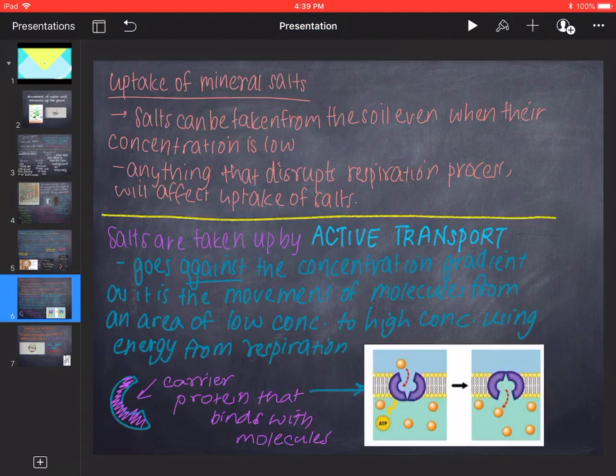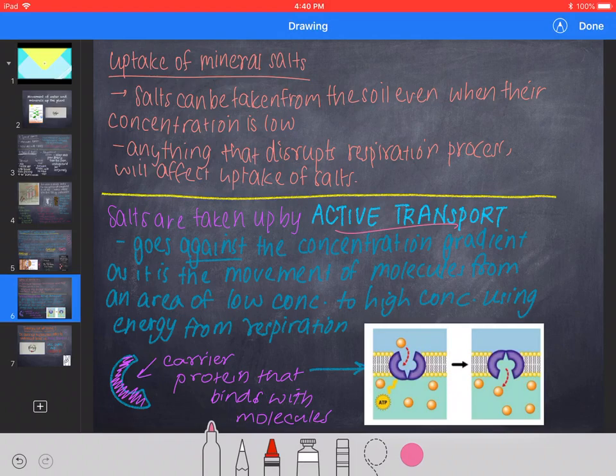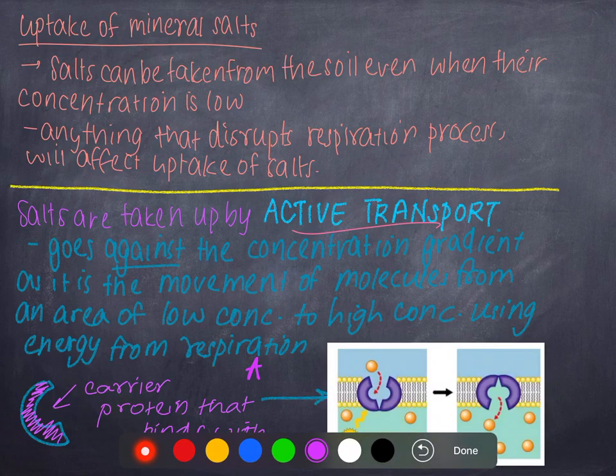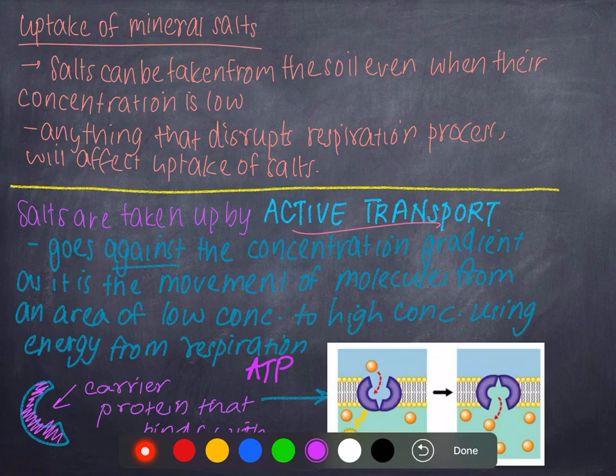Now uptake of mineral salts. Salts can be taken from the soil even when their concentration is low. Salt can still be taken up if its concentration in the soil is lesser than it is in the cell. Anything that disrupts the process of respiration will disrupt the process of taking up salts. Salts are taken up by active transport. Very important. This goes against the concentration gradient as it is the movement of molecules from an area of lower concentration to higher concentration that uses energy from respiration. This energy from respiration is called ATP, adenosine triphosphate. This energy is what allows it to go against the concentration gradient, thus move from low concentration to high concentration.